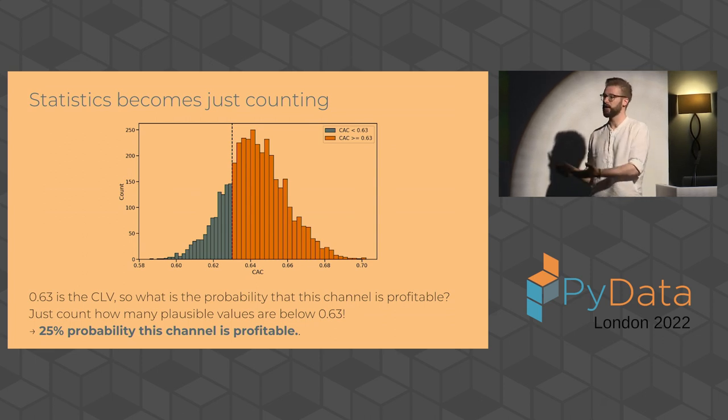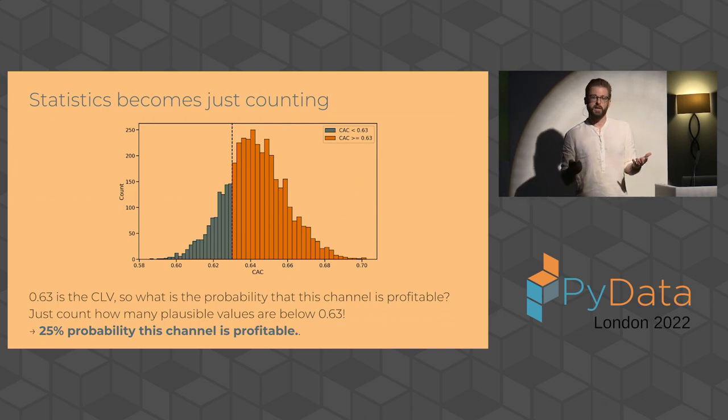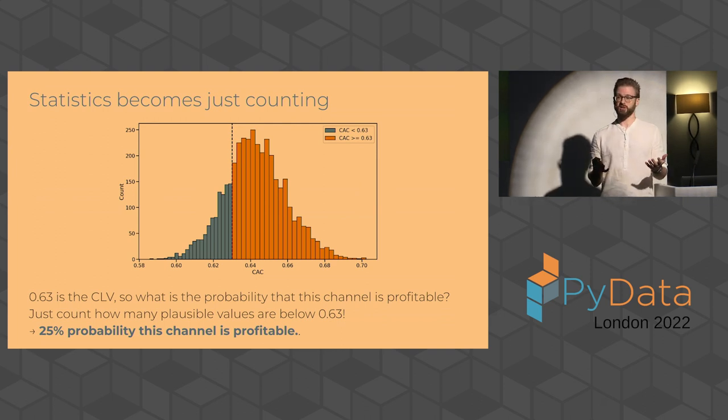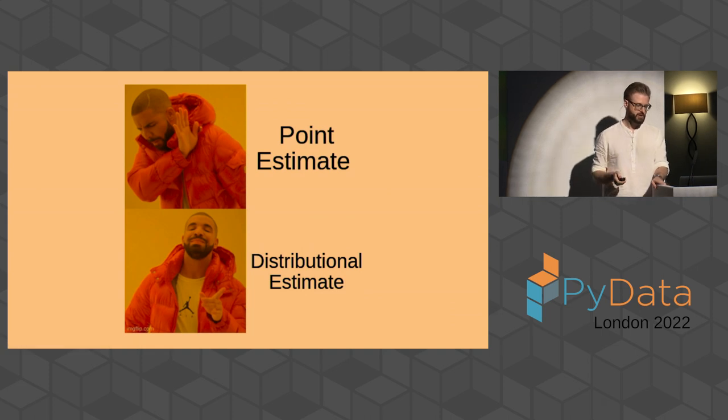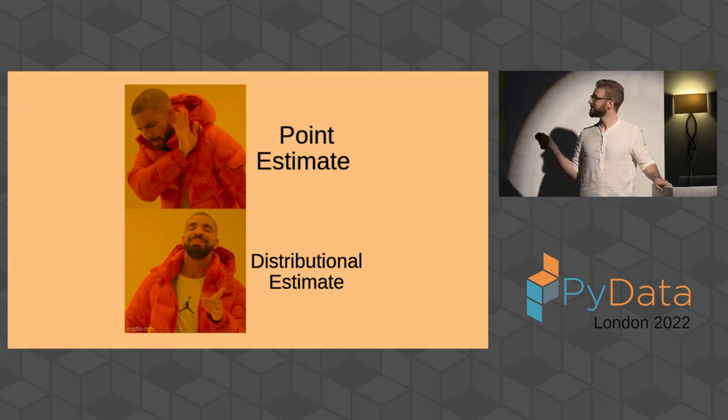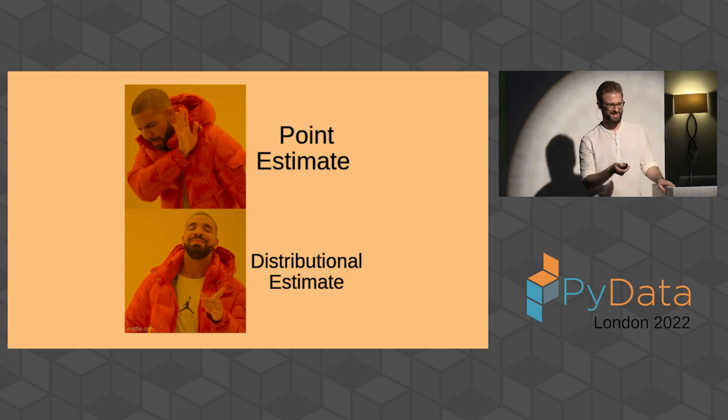And the thing that comes out when I do this is a probabilistic answer, which is 25% probability that this channel is profitable. And that's simple and awesome. Because that you can just take to someone and say, this is the answer basically that they're looking for. If you want to invest in this channel, this is the risk that you're taking on. And in business, we're always taking real world decisions. And so having that sense of uncertainty, probabilities is really, really important so that you know what kind of risk you're taking on. So as Drake would say, forget about point estimates, use distributional estimates.